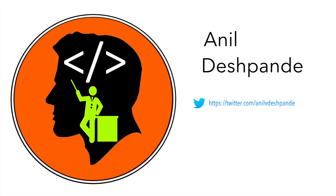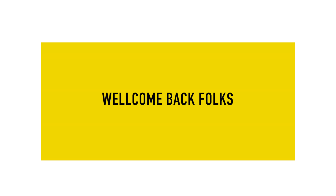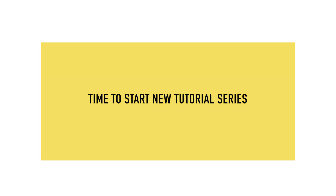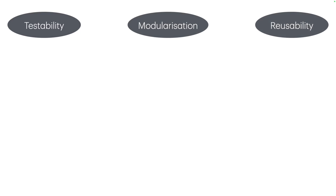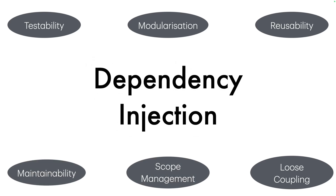Hi folks, co-tutor here and my name is Anil Deshpande. If you are trying to write good quality software or a good quality mobile application, some of the things you are looking for in the code are testability, modularization, reusability, loose coupling, scope management, and maintainability. And if you want to achieve these things, then dependency injection is very much at the center of it.